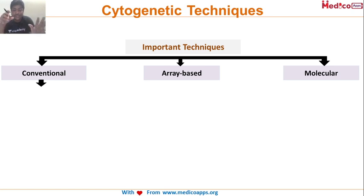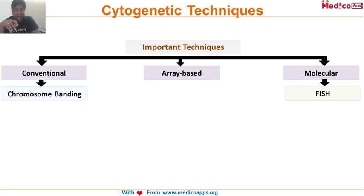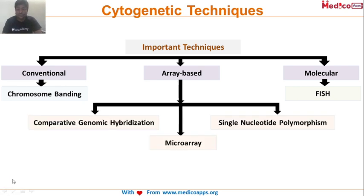Cytogenetic techniques are classified into three buckets: one is conventional cytogenetic techniques, which we generally call banding techniques. The second is array-based techniques — cassette array-based techniques — which are the latest and have made cytogenetics very affordable. The third is molecular cytogenetic techniques. Conventional techniques are basically chromosomal banding — G banding, R banding, and similar.